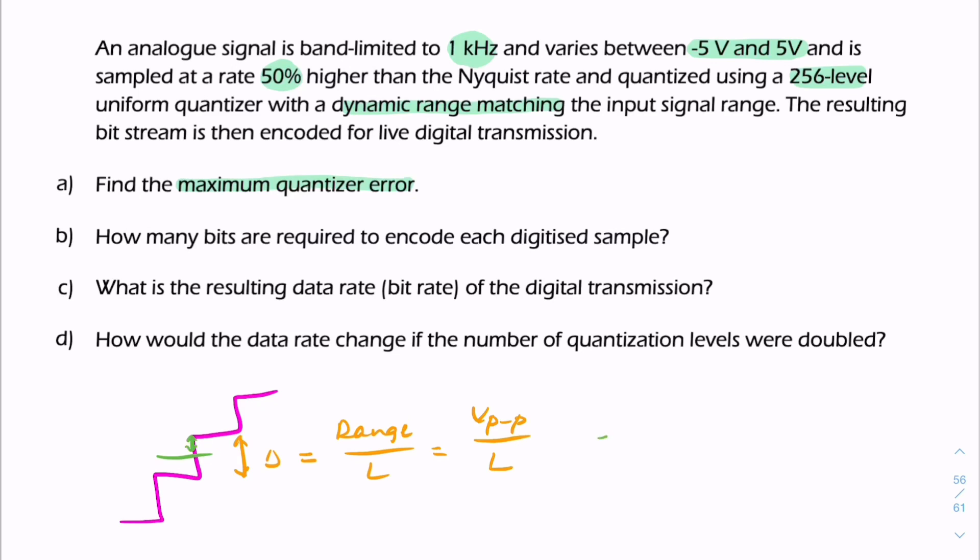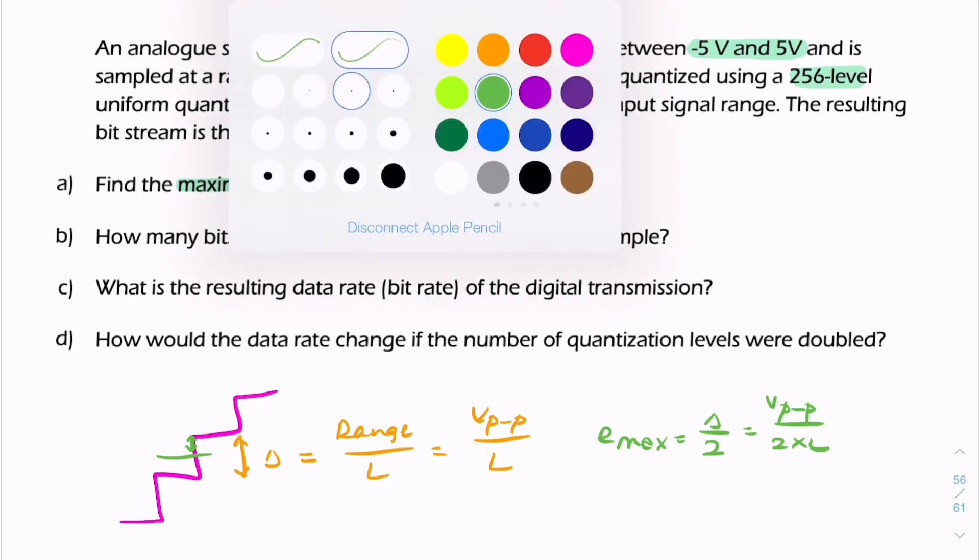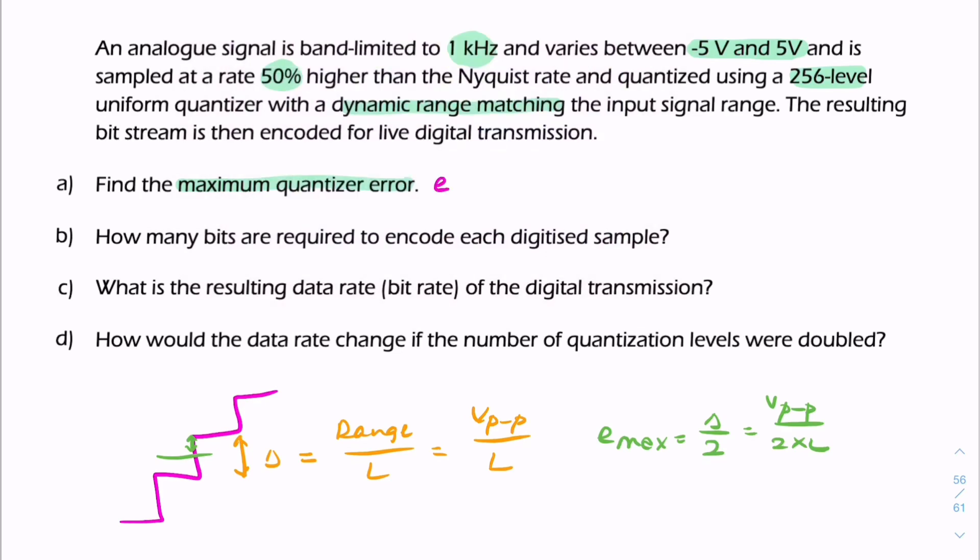So the quantization error, Emax, equals half the step size. That's the peak-to-peak voltage divided by 2 times L. So we can say that Emax is the peak-to-peak voltage, which is 5 minus minus 5 over 2 times L. L is the number of steps, 256. So we can calculate that as 0.0195 volt, because it's an error measured in volts.